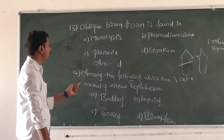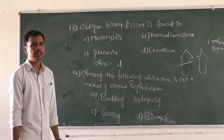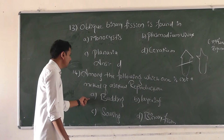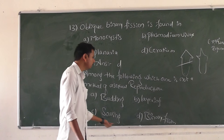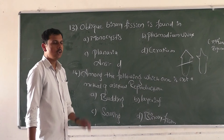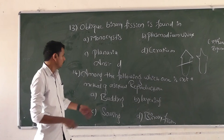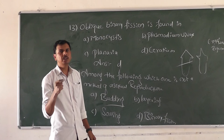Question number 14: Among the following, which one is not a method of asexual reproduction? In asexual reproduction, only one parent is involved and that parent gives birth to offspring that look exactly alike. The options are: option A budding, option B layering, option C sowing, and option D binary fission. Budding is a type of vegetative propagation and asexual reproduction.